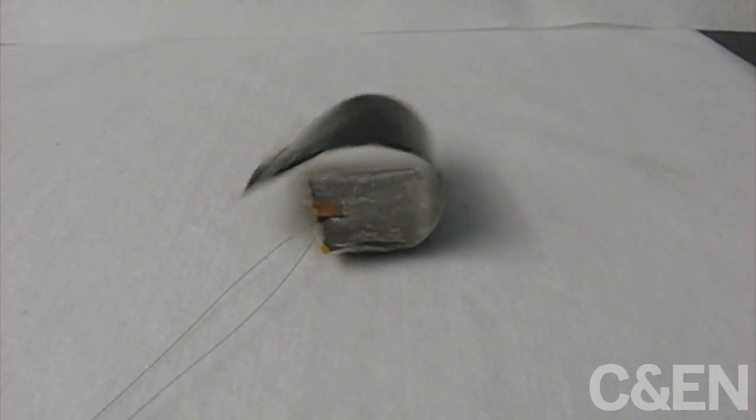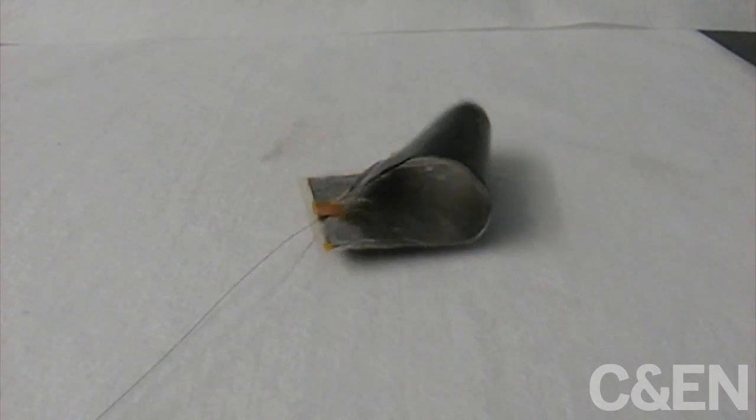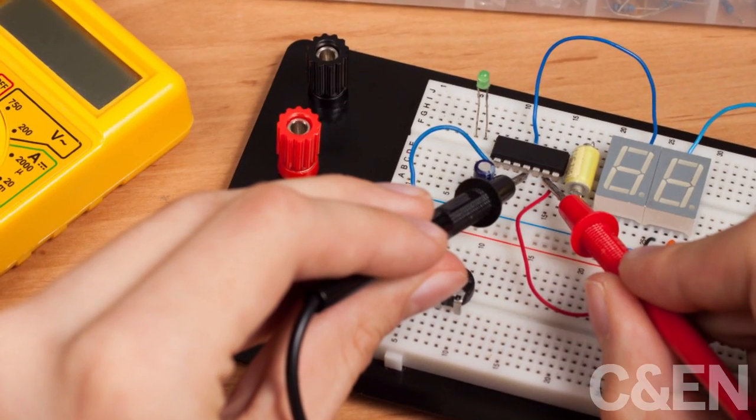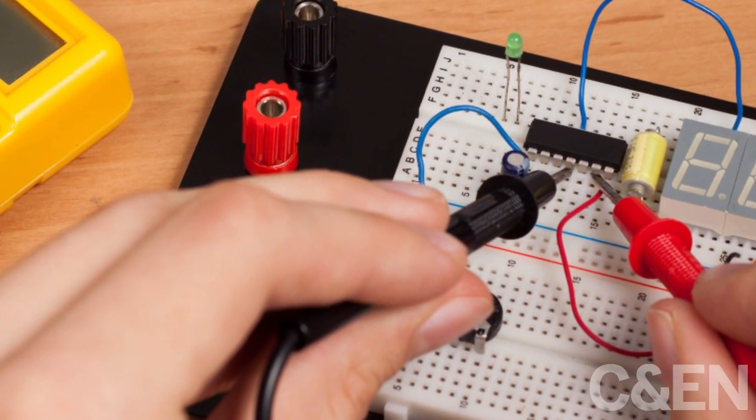Doing this, the researchers were able to harvest 5.6 nanowatts of electrical power from the device. That's orders of magnitude less than what it might take to charge a cell phone.